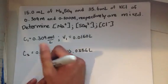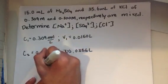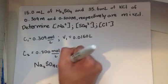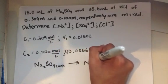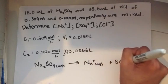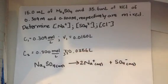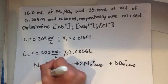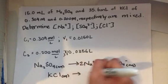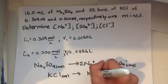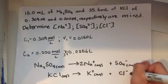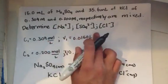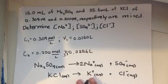Let's write down the dissociation for sodium sulfate: Na₂SO₄ in solution becomes 2 Na⁺ plus SO₄²⁻. To balance it, we add a coefficient of 2 in front of sodium. For potassium chloride: KCl in solution becomes K⁺ and Cl⁻. We don't have to worry about the potassium ion because it's not of interest — it's not part of the question.